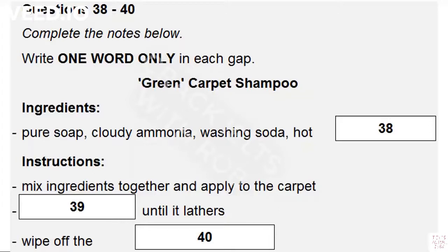Carpets can be shampooed using a combination of pure soap, washing soda, cloudy ammonia and some boiling water. You put a small amount of this mixture onto the mark on the carpet, rub with a cloth until it lathers and then wipe off the excess. A smelly carpet can be deodorised by sprinkling bicarbonate of soda on the surface, leaving overnight and vacuuming off the next day.